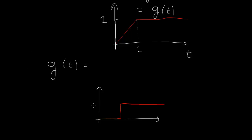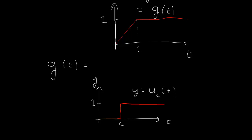It steps up to 1 at some value c. If this is the t-axis and this is y, then this is the Heaviside step function, denoted as u sub c of t — a function of t with parameter c. So c is where this Heaviside step function steps up.